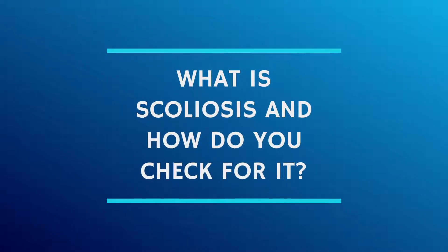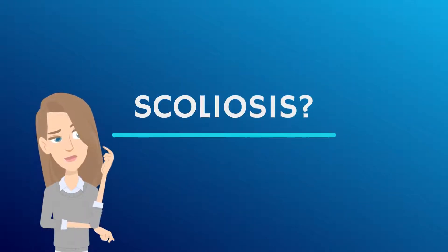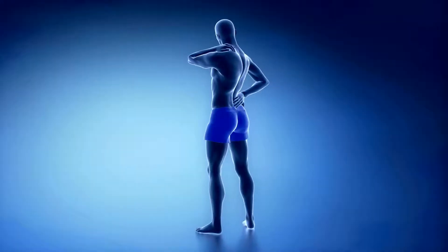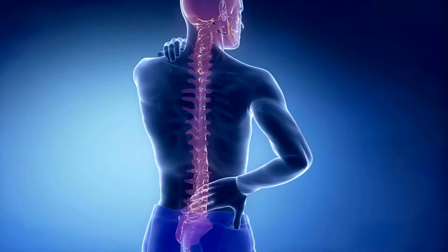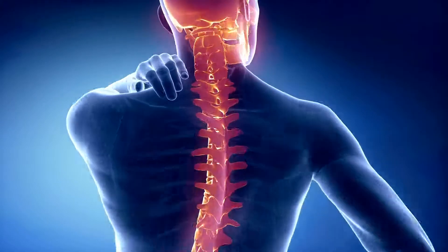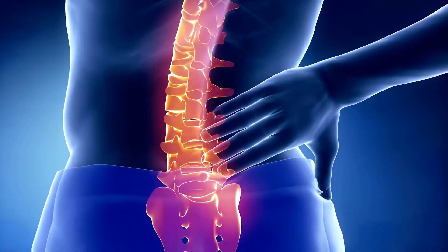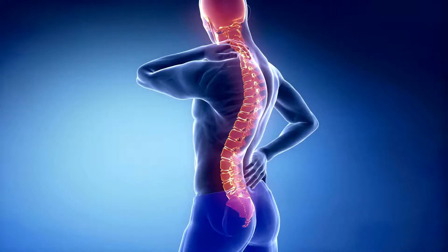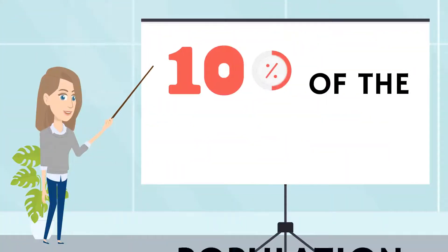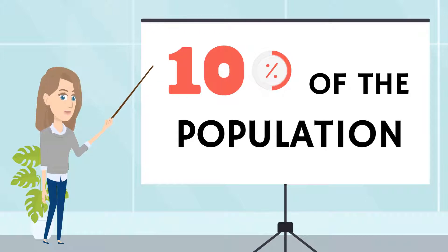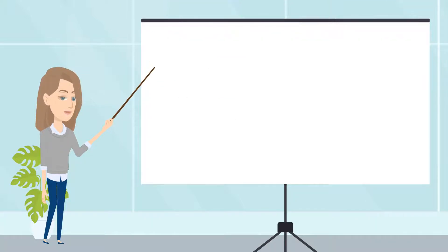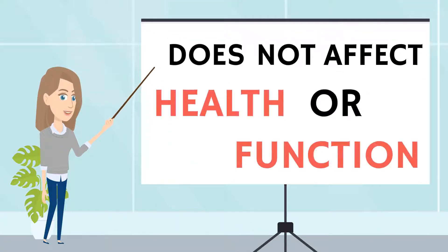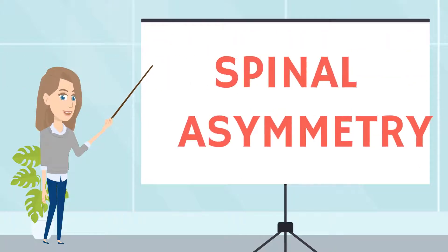What is scoliosis and how do you check for it? Scoliosis is a spinal condition where the spine twists and curves to the side. Approximately 10% of the population has small curves, which are less than 10 degrees, and this does not affect their health or function. This is called spinal asymmetry.